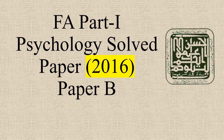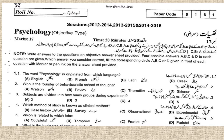MCQ number one: the word 'psychology' is originated from which language? The word psychology has been derived from two Greek words — 'psyche' and 'logos'. So we can obviously say that it is from Greek, or Unani. The right option is D: Greek.